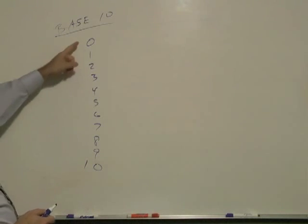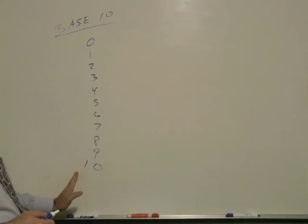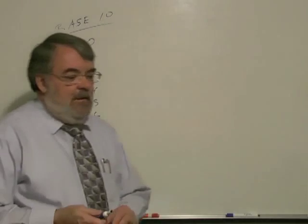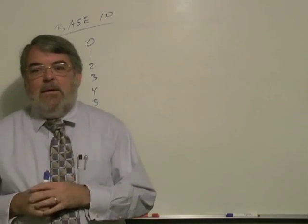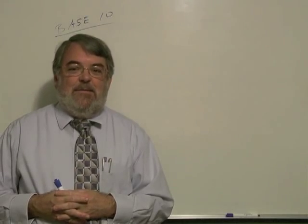We start recycling our numbers by creating a new place value, then it goes 11, 12, and so on. I think I'll leave it at that. Let's go on to the base 2 binary system.